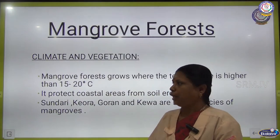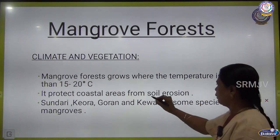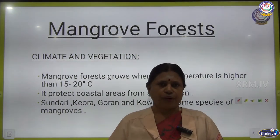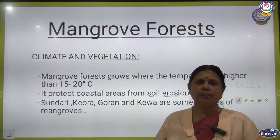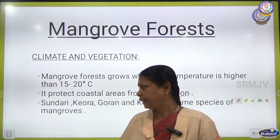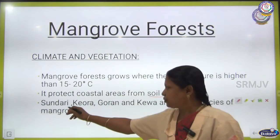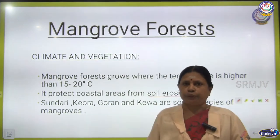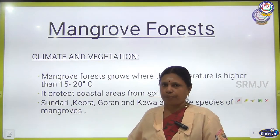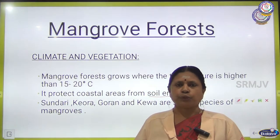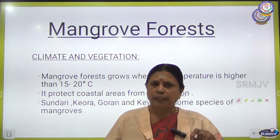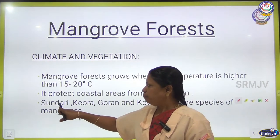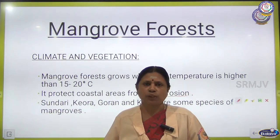Mangrove forest grows where the temperature is above 15 to 20 degree Celsius. It protects coastal areas from soil erosion — the top layer of soil washed away by wind, flood, or rain water. These mangrove trees help protect the soil. The varieties of mangrove trees are Sundari, Kiora, Goran, and Kiva. Sundari is a mangrove tree which grows largely in West Bengal, and that deltaic region is called the Sundarbans delta because of the large number of Sundari trees grown there.